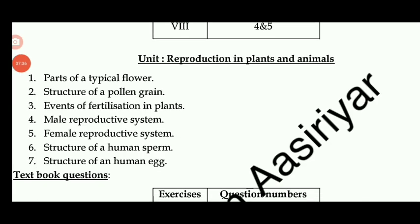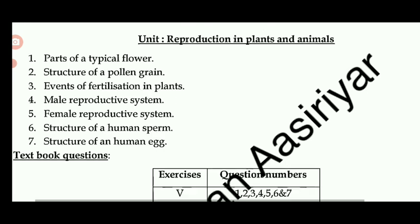Next topic: reproduction in plants and animals. Important questions include: parts of a typical flower with diagram, structure of pollen grain, events of fertilization in plants, male reproductive system, female reproductive system, structure of human sperm, and structure of the human egg.